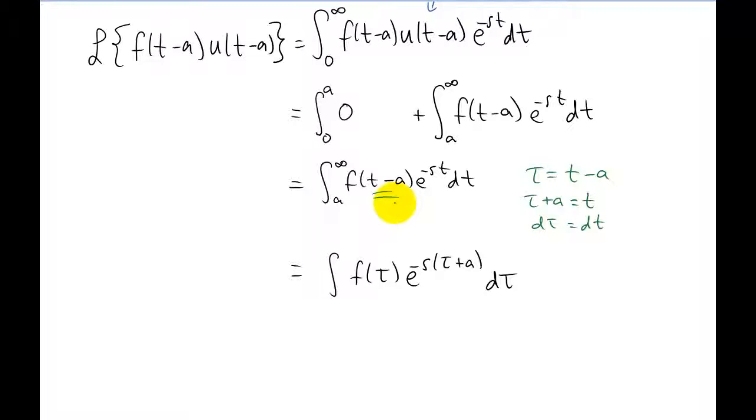dt becomes dtau. Now these limits of integration up here were values, limits on t that went from a to infinity. What I like to do is replace t with tau plus a. And now I think it's pretty obvious that if we subtract a from both sides of this equation, our limits now go from 0 to infinity.